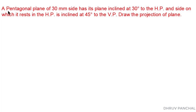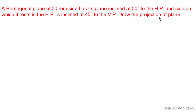Here is our data for the problem. A pentagonal plane of 30 mm side has its plane inclined at 30 degrees to the horizontal plane, and the side on which it rests in the horizontal plane is inclined at 45 degrees to the vertical plane. Draw the projection of the plane.